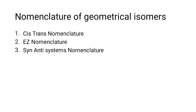In this topic, we will discuss the nomenclature of geometrical isomers. There are three types of nomenclature: first, cis-trans nomenclature; second, E-Z nomenclature; and third, syn-and-anti system nomenclature.